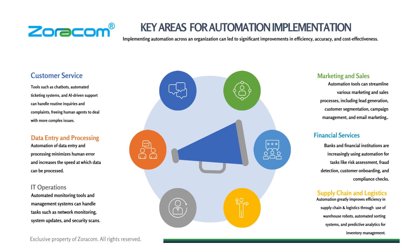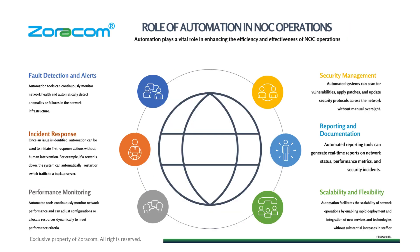In financial services, banks and financial institutions are increasingly turning to automation, which has helped them in customer onboarding, fraud detection, and compliance checks. In supply chains and logistics, automation improves supply chain operations through tools like warehouse robots, automated sorting systems, and inventory management. These are a few areas for automation implementation.